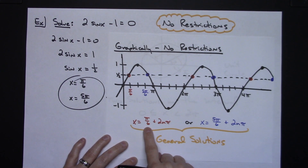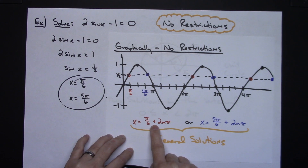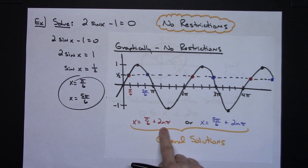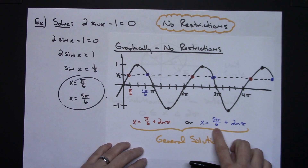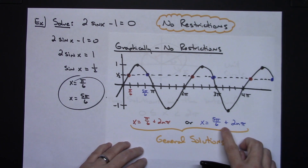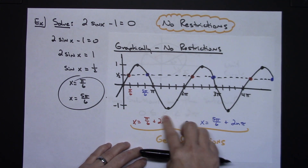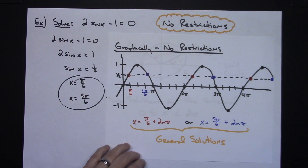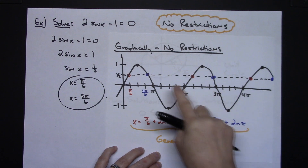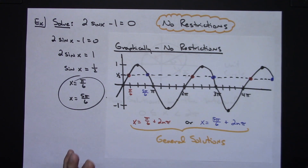To express all possible answers, we write general solutions. Take the first answer, π/6, and write x = π/6 + 2nπ, where n is any integer. The second answer is 5π/6, so x = 5π/6 + 2nπ, n is any integer. Adding the period 2nπ to each answer generates all solutions across every period.